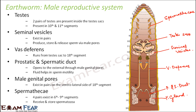The male reproductive system of any earthworm produces sperm — that is its basic function. The testis inside the testis sac produce the sperm, just as in human beings. The seminal vesicles temporarily store those sperms and then release them through the vas deferens. The vas deferens carries the sperm through the prostatic and spermatic duct, where fluids help in sperm movement, and finally the sperm is given out through the male genital pore.